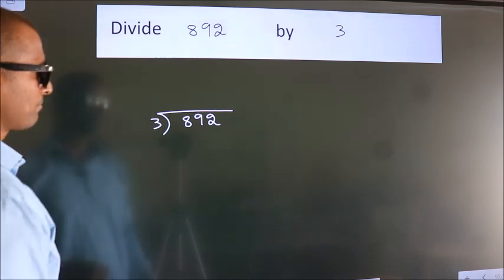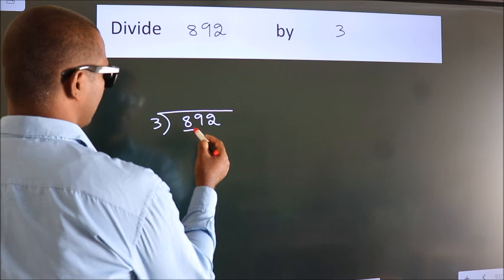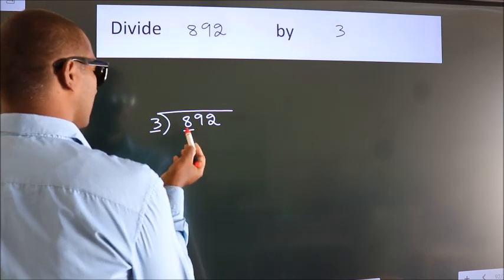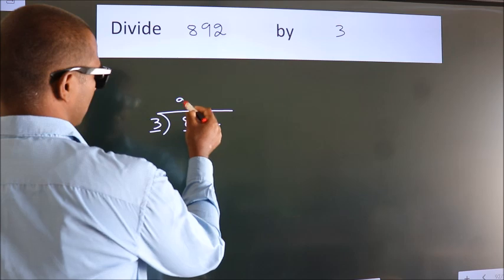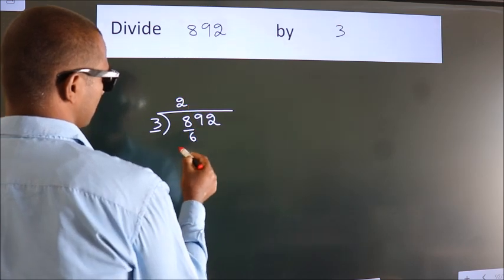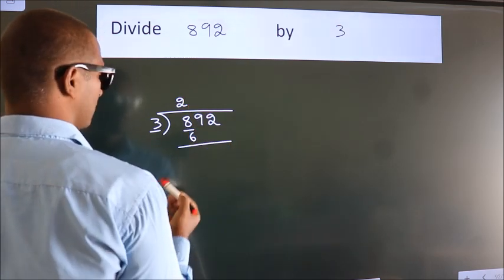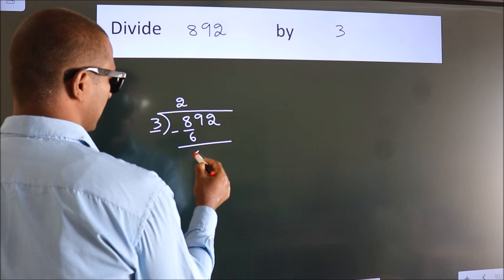Next. Here we have 8, here 3. A number close to 8 in 3 table is 3 2's, 6. Now we should subtract. We get 2.